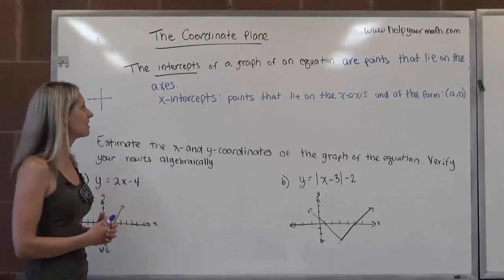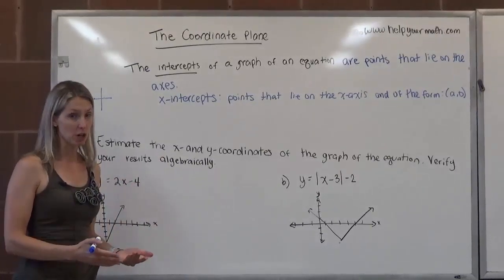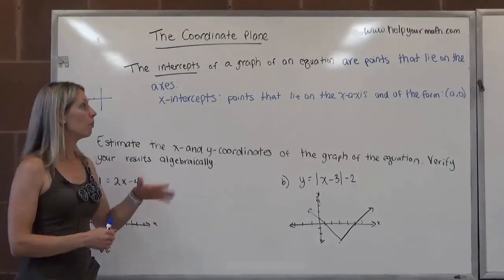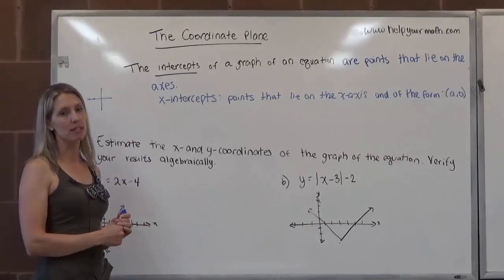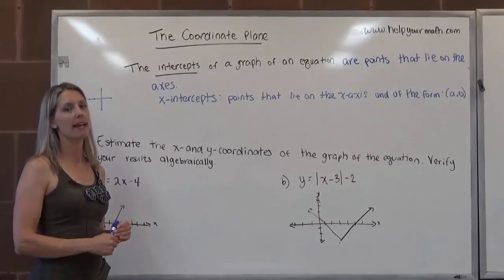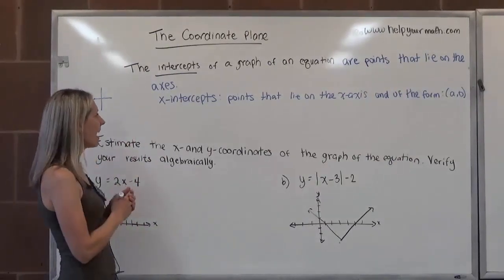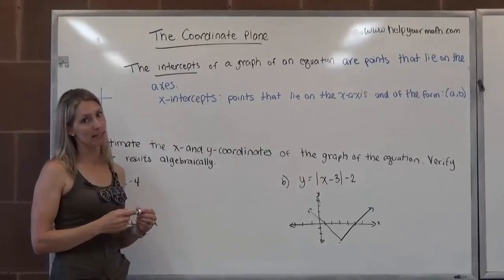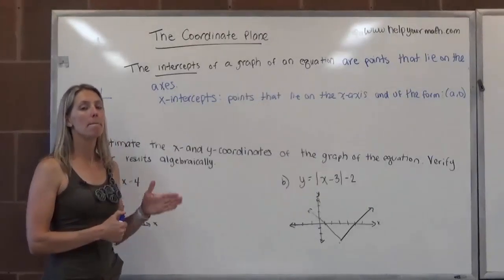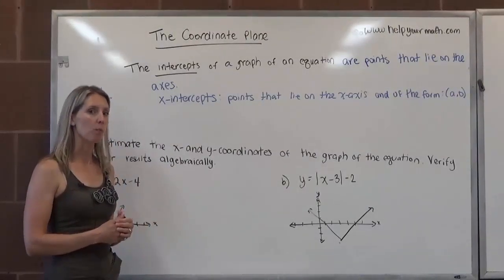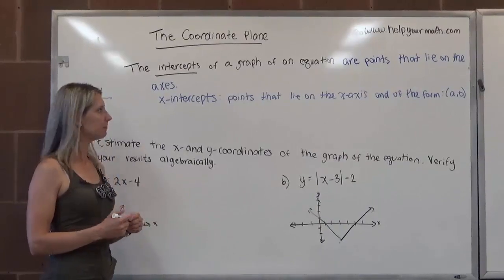If you're asked to find the x-intercepts of a graph and you're given its equation, what that means is that you substitute in zero for y and then solve for x. So if you're asked to find the x-intercepts of an equation, plug in zero for y — set y equal to zero — and then solve for x.